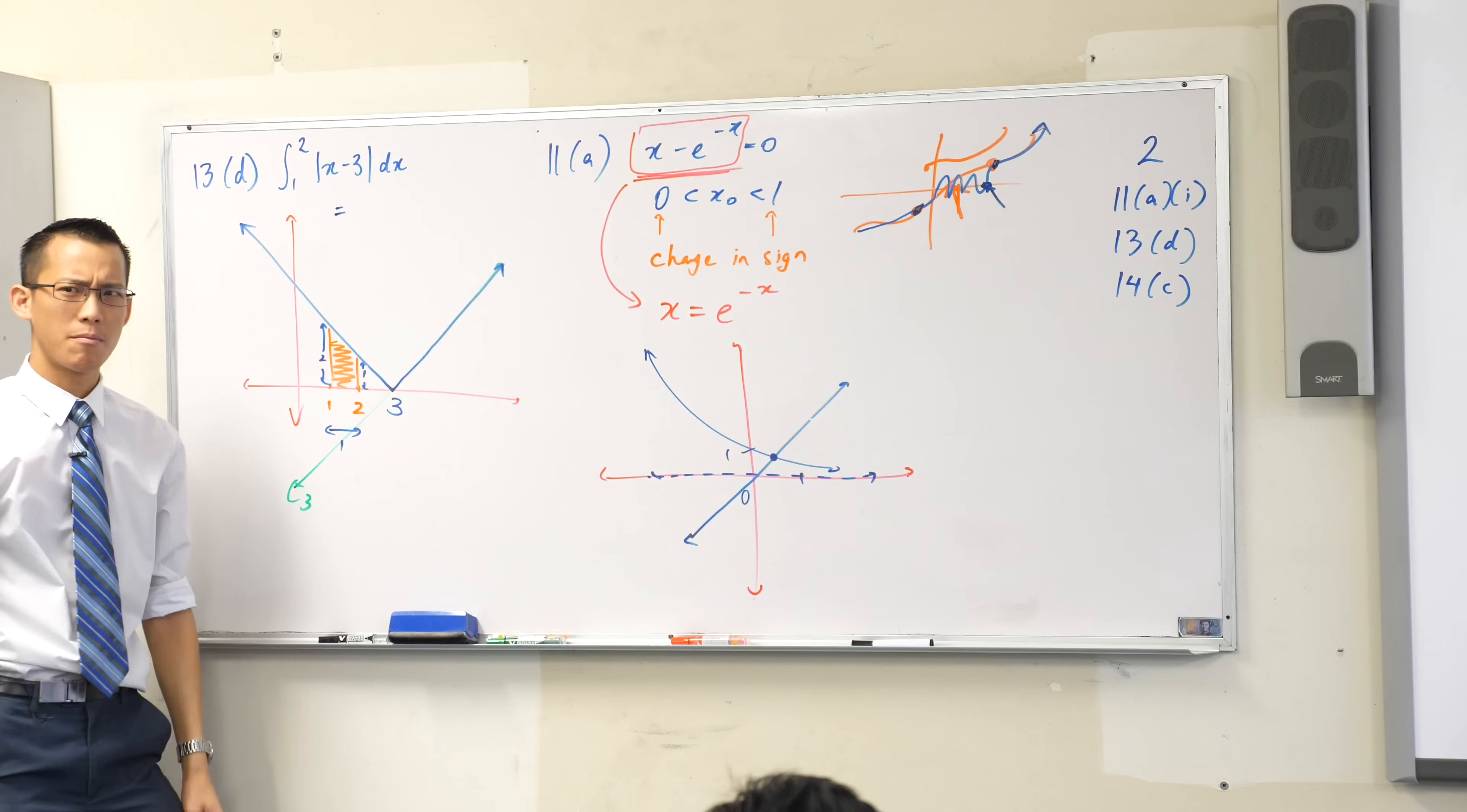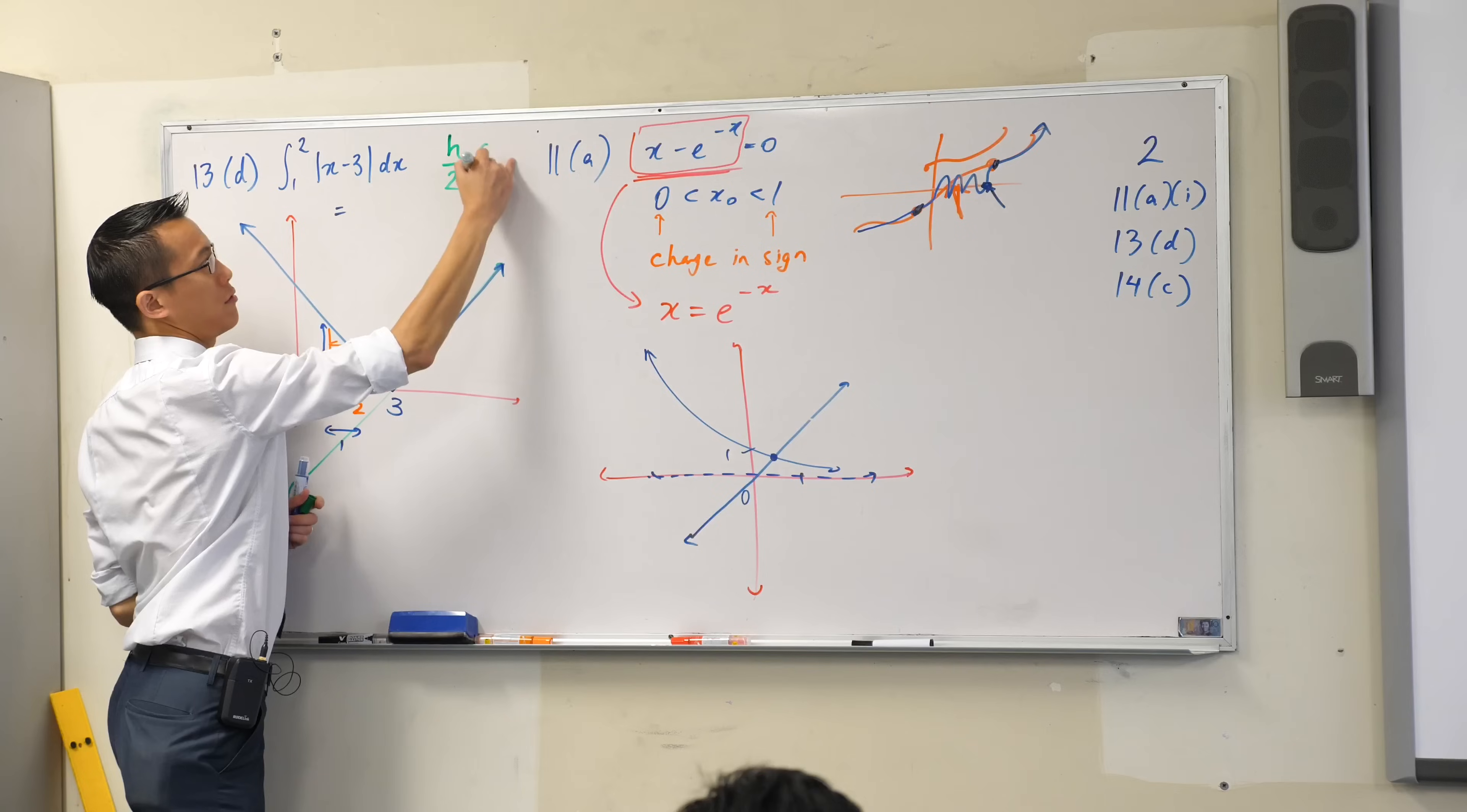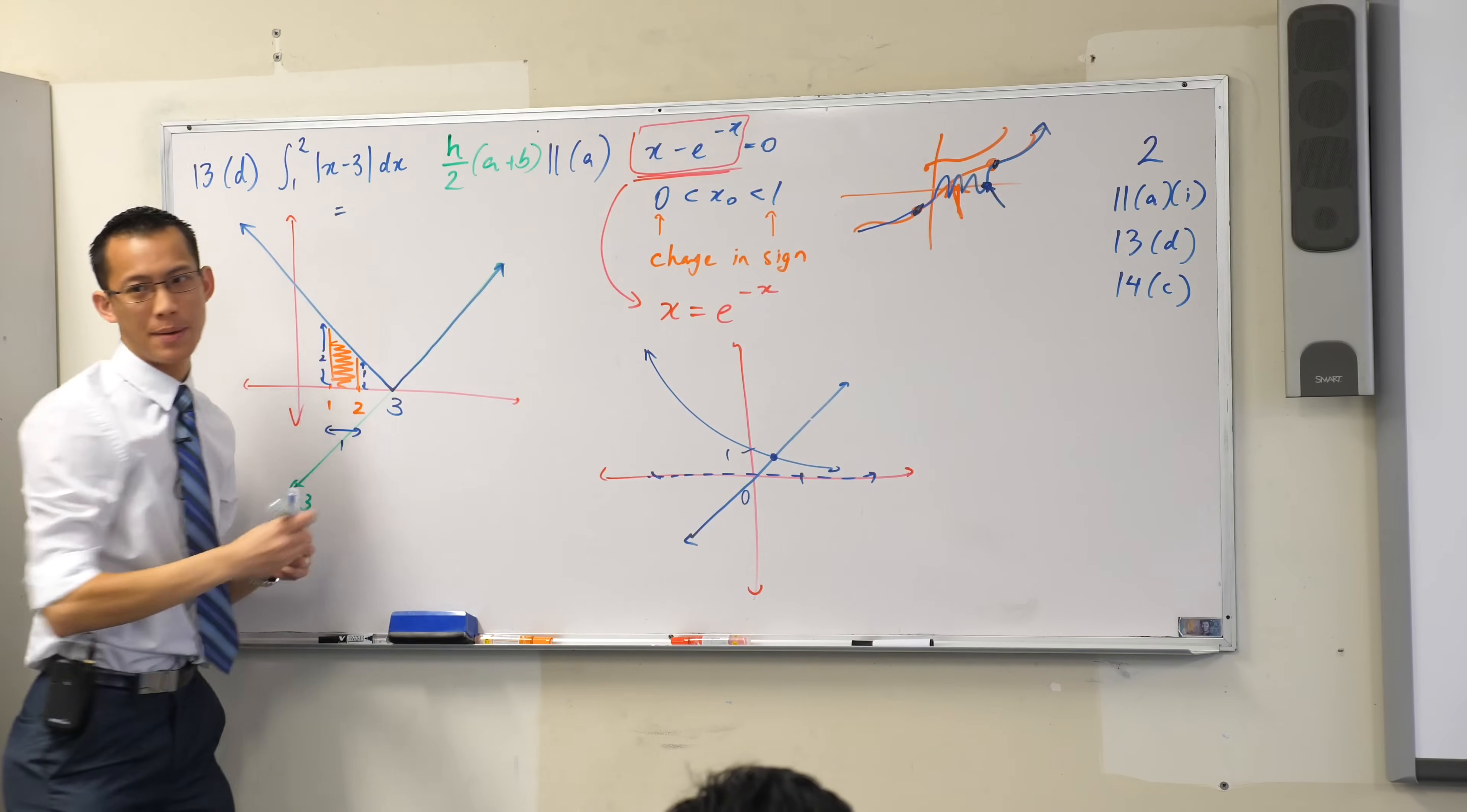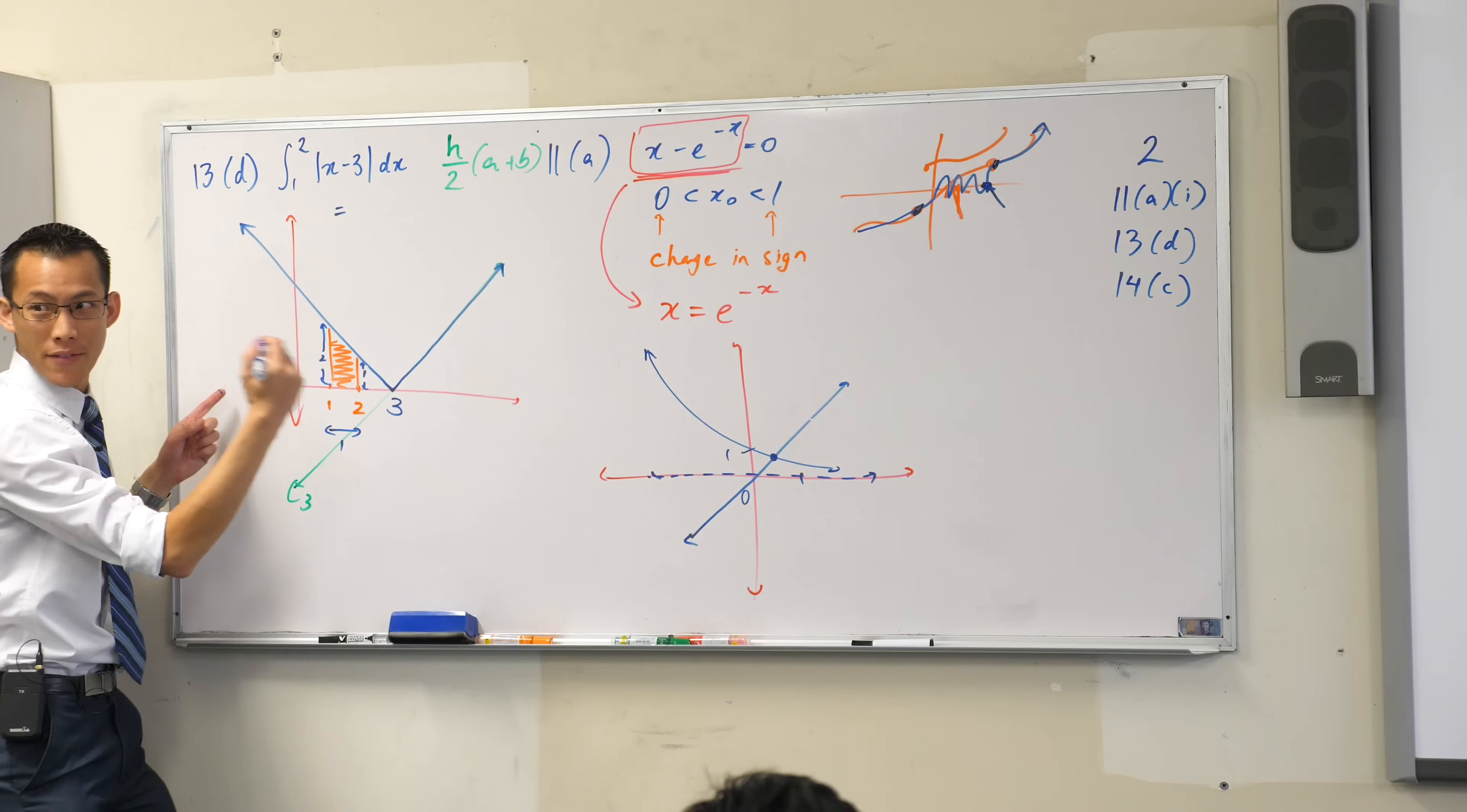They're the same shape, so I'm pretty sure the formula for the area of the trapezium is h over 2 times a plus b, where a and b are your parallel sides. Okay, so what am I going to get? Put in my values.